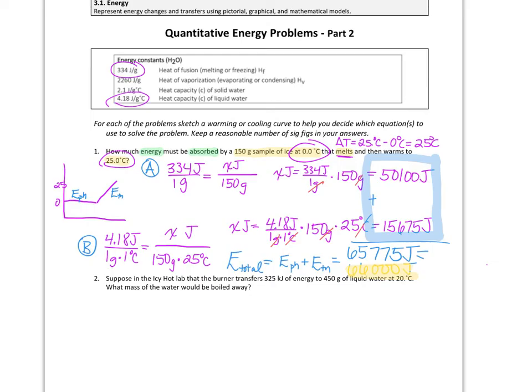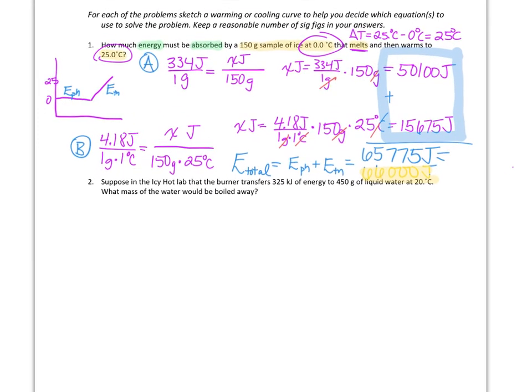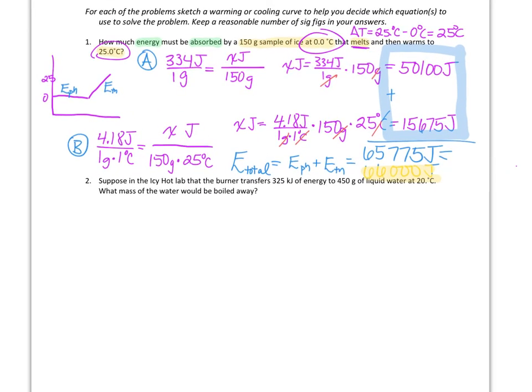For our second example: a burner transfers 325 kilojoules of energy to 450 grams of liquid water at 25 degrees Celsius. We want to know what mass of water would be boiled away. Let's start by sketching the curve to see what's happening.